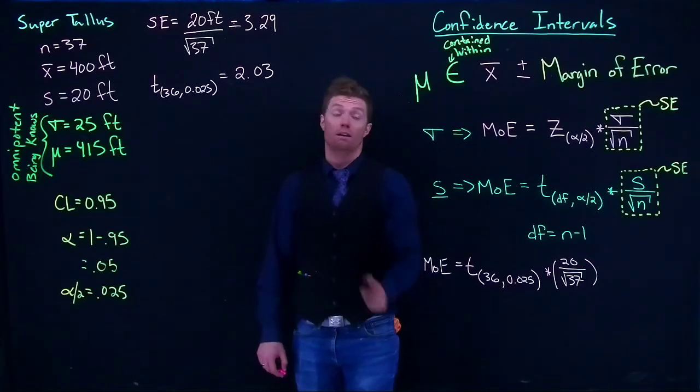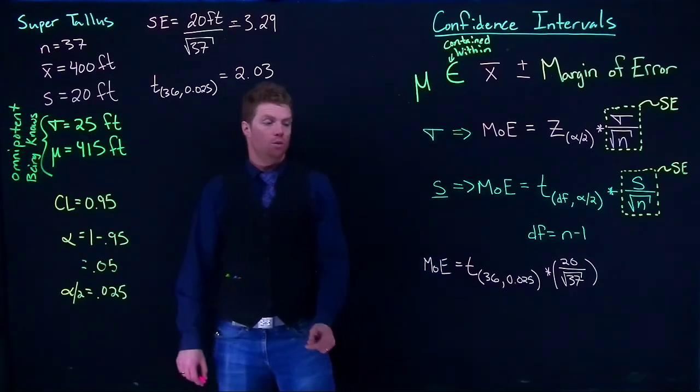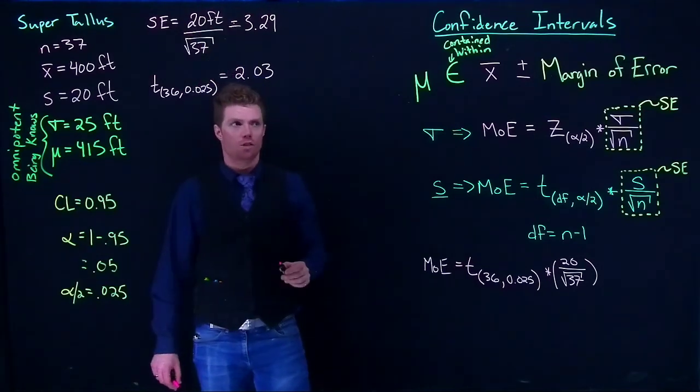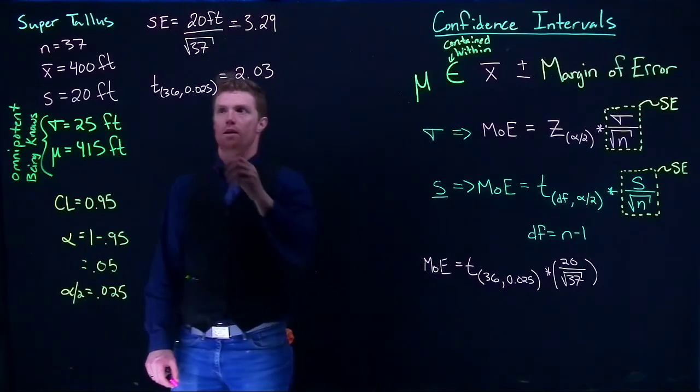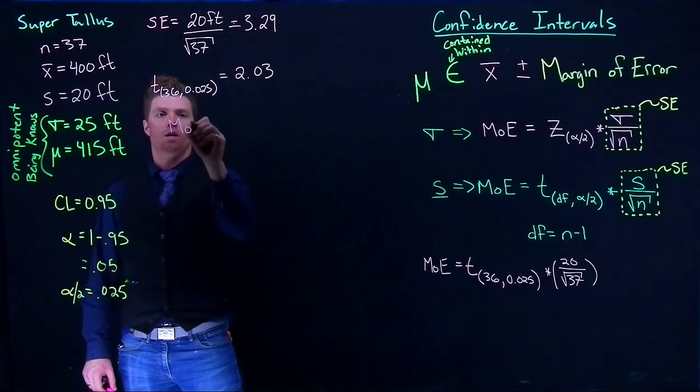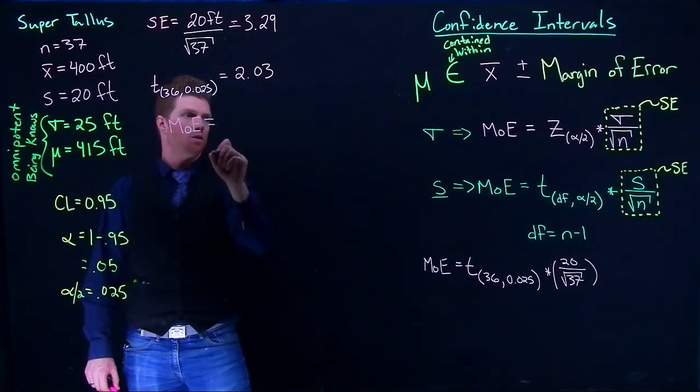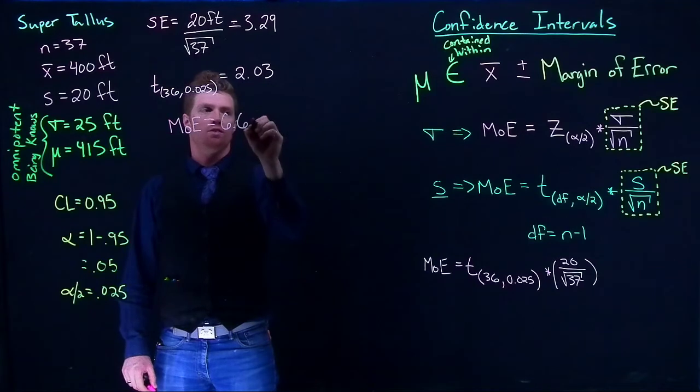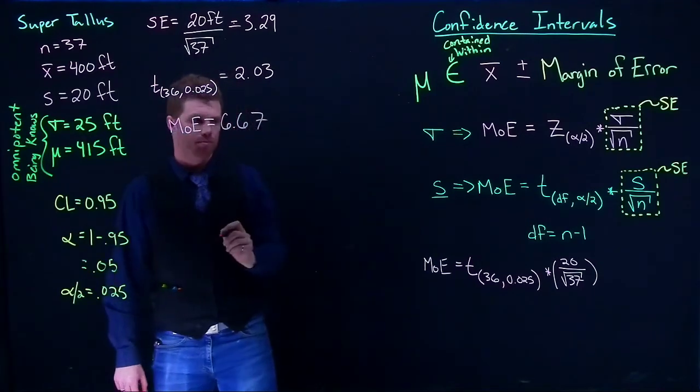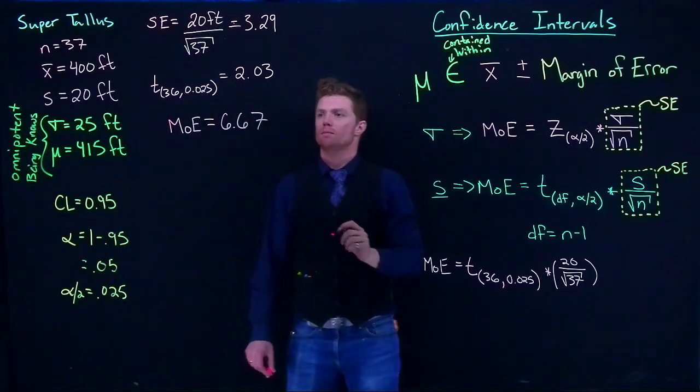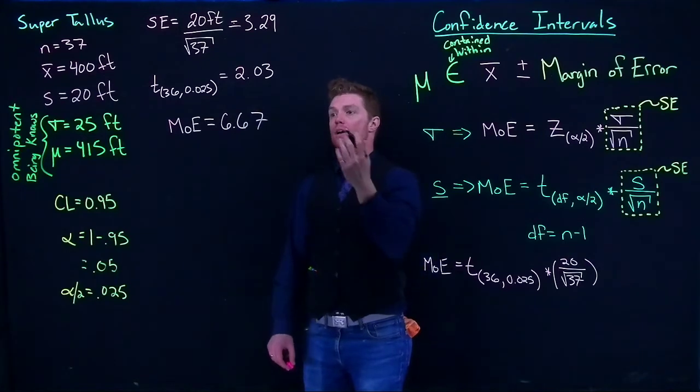All right, so we've got our T now. Great. So now what we can do is we can do our T multiplied by our standard error, which gives us our margin of error. And so we can just say that our margin of error here is going to equal 6.67.